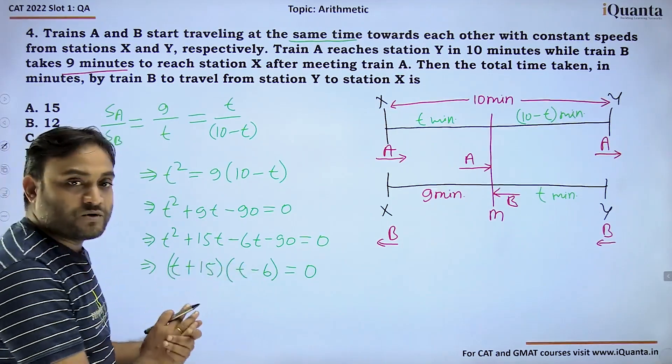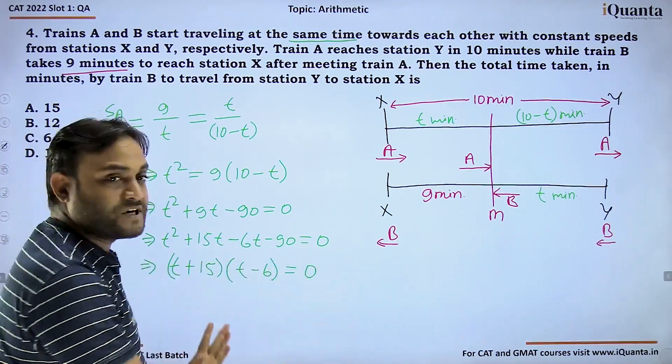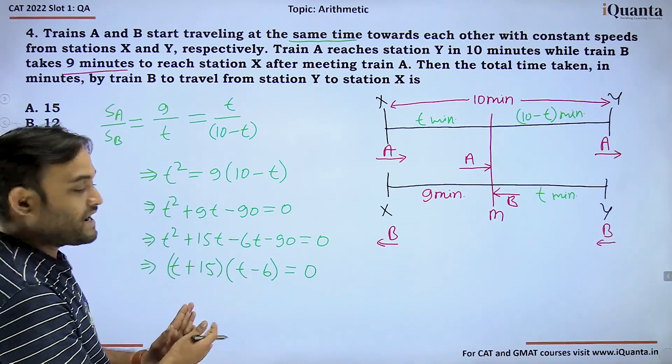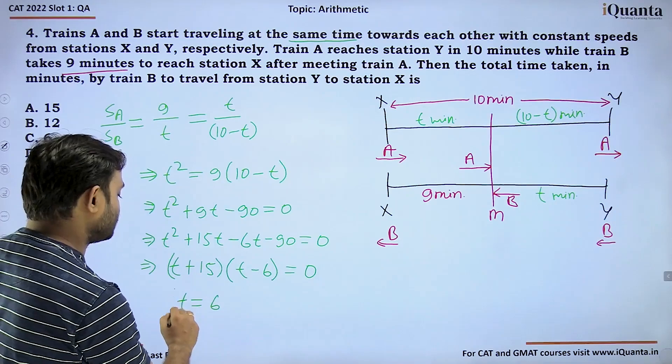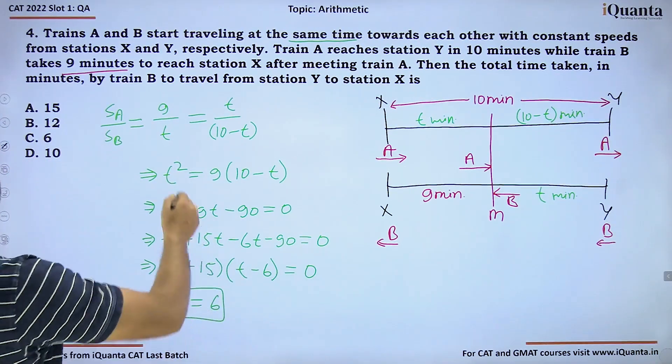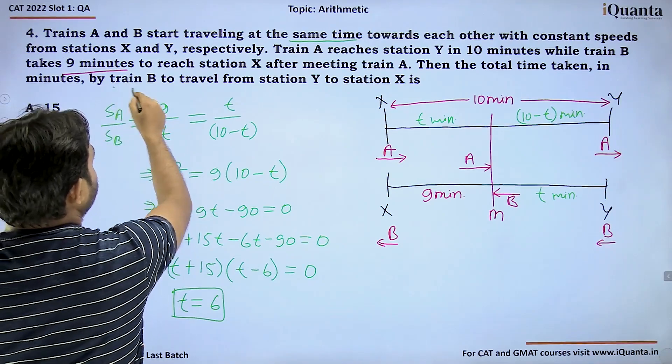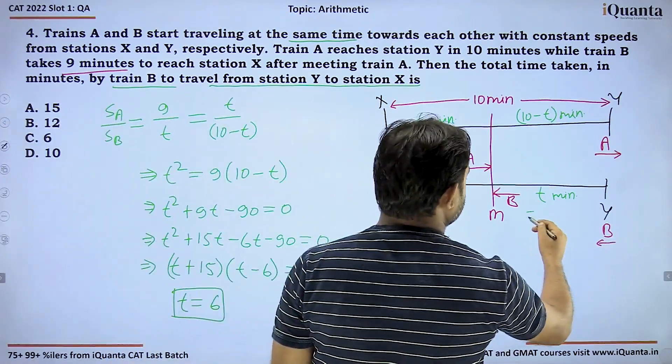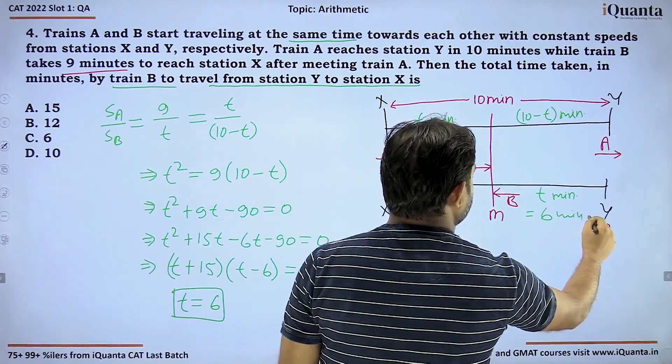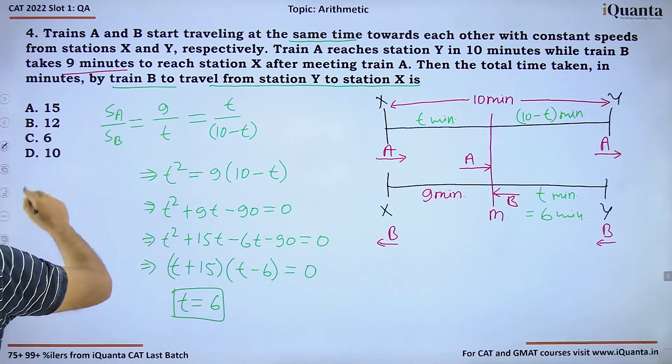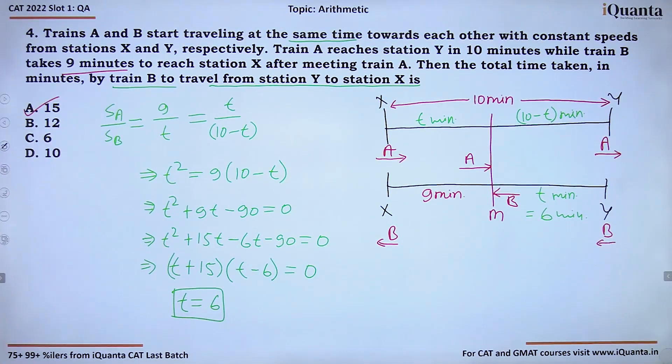T cannot be minus 15, so T must equal 6. Time taken by train B to travel from station Y to station X is 6 plus 9 which is 15 minutes in total. Our answer is option A which is 15.